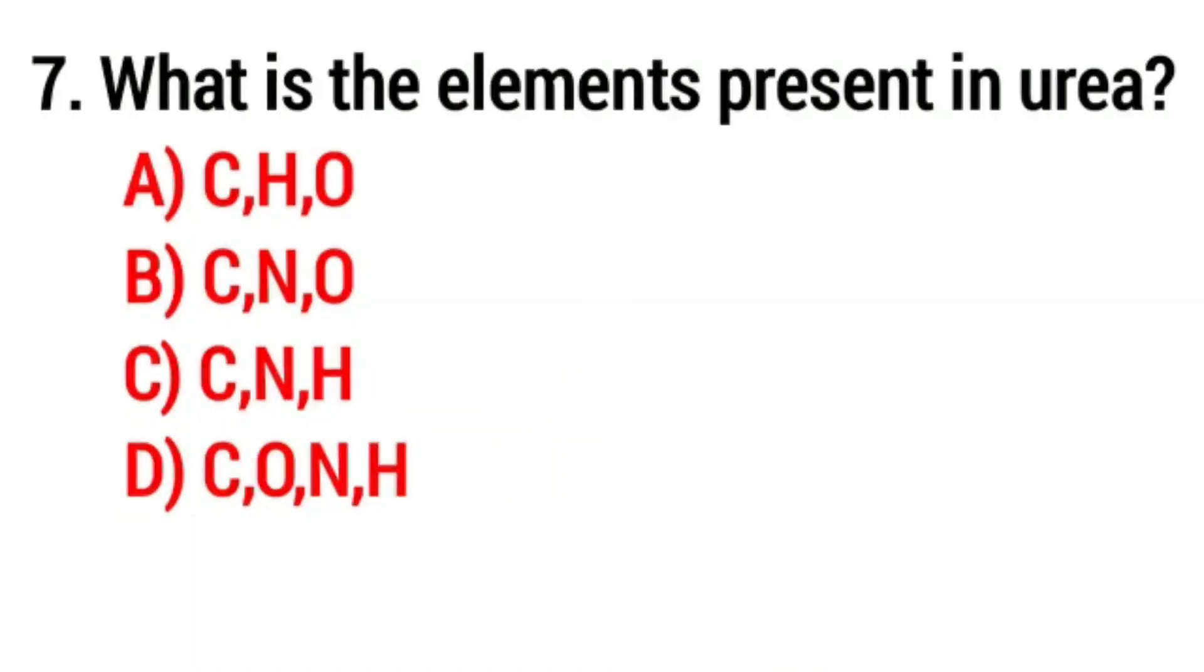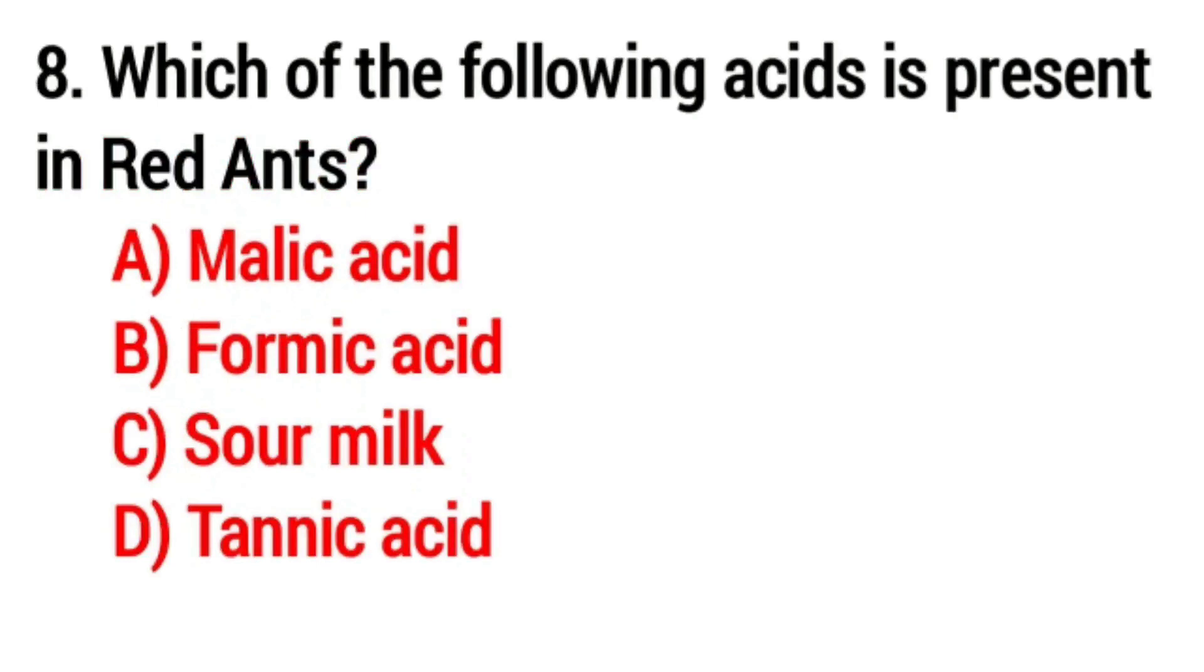Question number seven: What are the elements present in urea? Answer: option D, carbon, oxygen, nitrogen, and hydrogen. Question number eight: Which of the following acids is present in nettle? Answer: option B, formic acid.